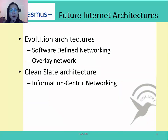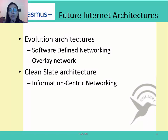Therefore, it is necessary for us to have a new internet architecture to cope with many recently arising problems in current networks due to the fast development of the internet. There are already several proposed architectures for the future internet. In this lecture, we introduce three architectures which attract the most attention: namely, software-defined networking, overlay networks, and information-centric networking.